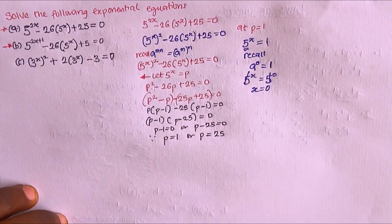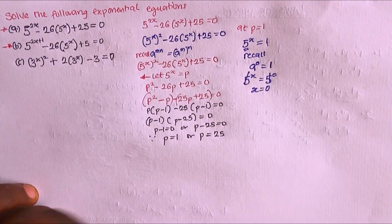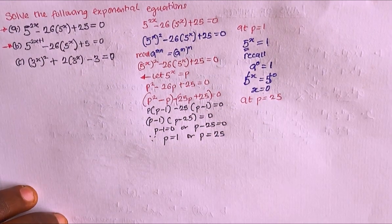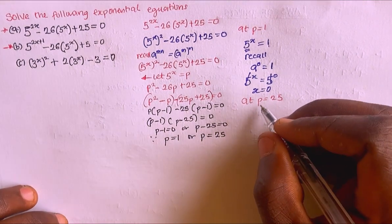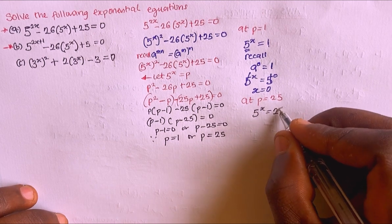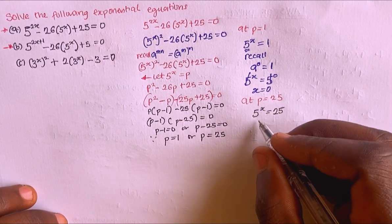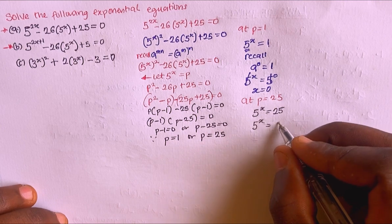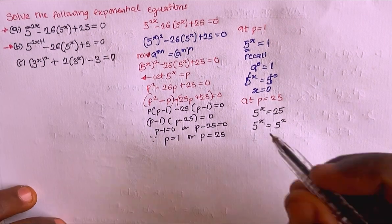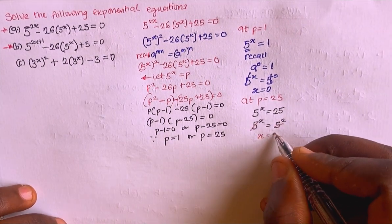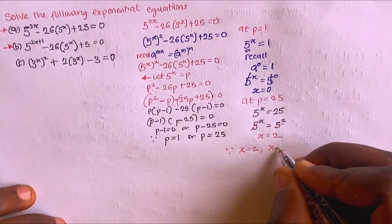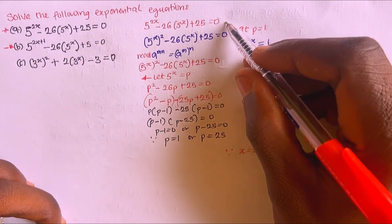At p equals 25: recalling p is 5^x, I have 5^x equals 25, which means 5^x equals 5^2. The bases cancel, so x equals 2. Therefore the values of x are 2 and 0 for this equation.